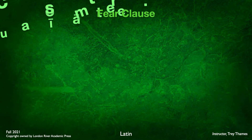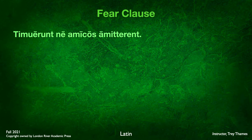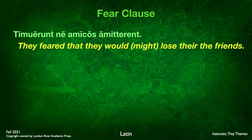Here's another example: timuerunt ne amicos amitterent. They feared that they would lose or might lose their friends. This is a positive fear clause. Notice the perfect tense in the main verb and the imperfect subjunctive amitterent, which tells us it's happening at the same time but in the past — so we use would or might as our auxiliaries.